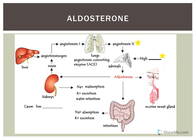The mineralocorticoid aldosterone is produced by the zona glomerulosa. Its targets include the eccrine sweat glands, intestines, kidneys, and salivary glands. In the eccrine sweat glands, secretions transported up the ducts are modified, affecting levels of sodium and potassium. Overall, aldosterone increases sodium absorption or reabsorption, and increases potassium secretion, which can lead to excretion from the body.